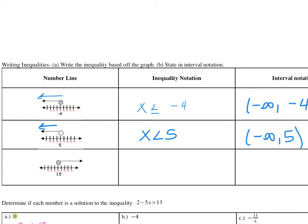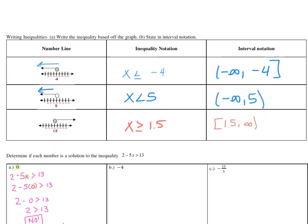Try to do the next example by yourself. When doing this example, we see that we are shading to the right of 1.5, so all values of x have to be greater than or equal to 1.5. The reason we say greater than or equal to is because 1.5 is included in our solution. When we write our answer in interval notation, we get 1.5 to infinity with a bracket around 1.5 and a parenthesis around infinity.